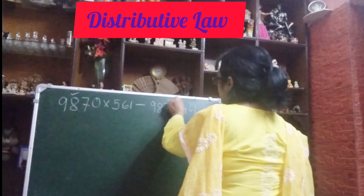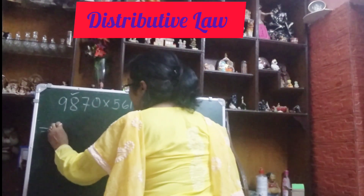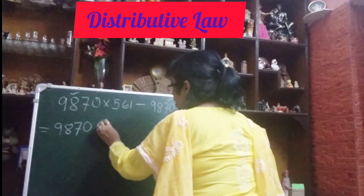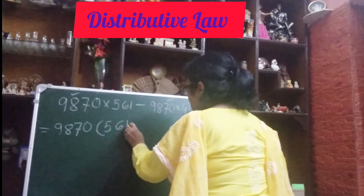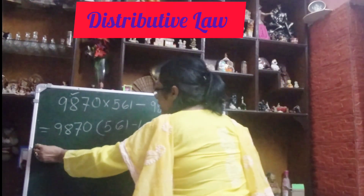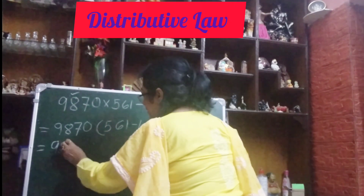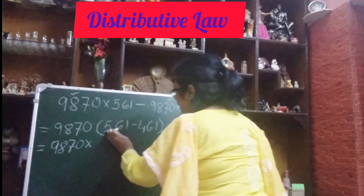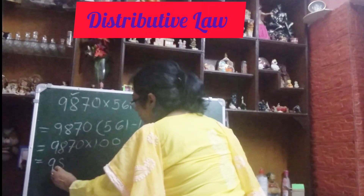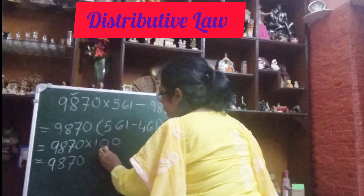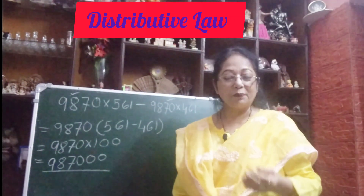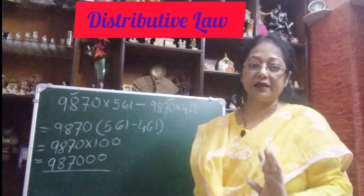Here also, on both sides of the minus sign, 9870 is there. So I am taking 9870 as common. What is left: 561 minus 461 — I have taken both, so 9870 × (561 − 461). Now if you subtract 561 − 461, you get 100. So simply multiply: write down 9870 and add two zeros — 987000. And this is your answer, so simple. Practice this and you can definitely do the sum correctly.